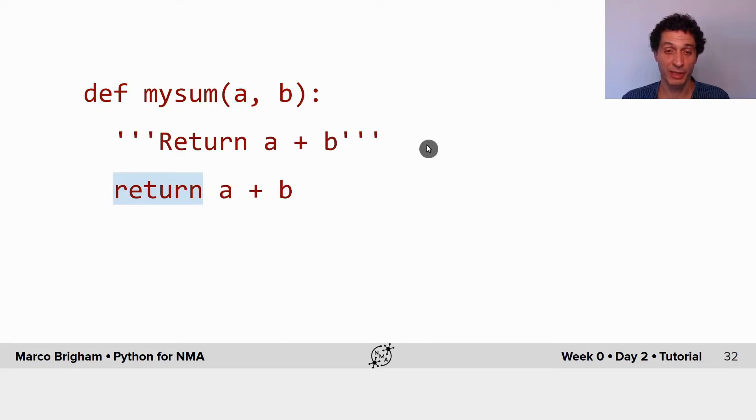We can specify some comments, some instructions on how to use the function and this is how we give the return from our function. So here we are just adding up a and b.